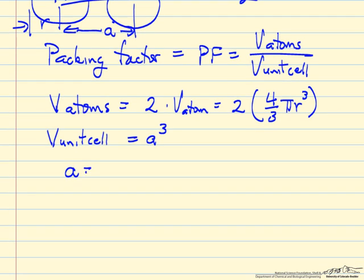It turns out A is 4r over the square root of 3 for a body-centered cubic structure, and there's a separate video that derives this just from the geometry and Pythagorean theorem, the relationship between A and R, so we won't repeat that here.